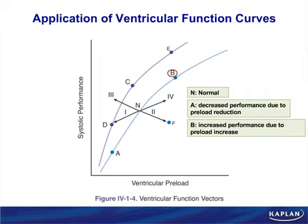This is the big key when analyzing these graphs for USMLE Step 1. We ask ourselves two questions: number one, what happened to preload? Number two, what happened to performance? If preload and performance go in the same direction — for example N to B, or N to A — then there's a Frank-Starling mechanism involved.